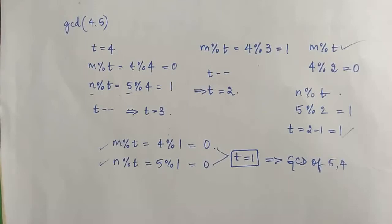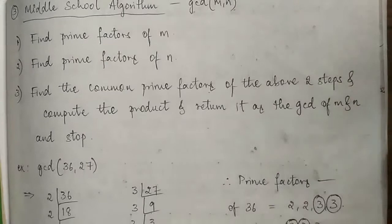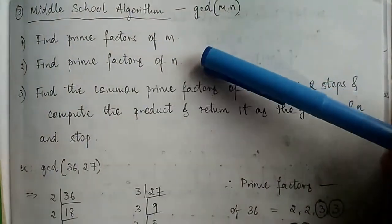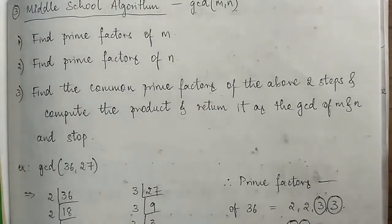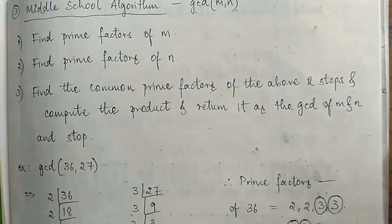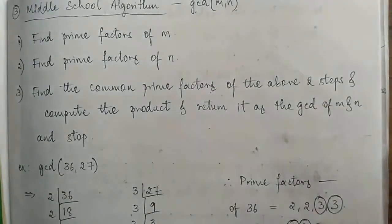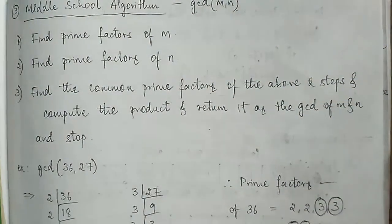There is a third method called the middle school method, which is also used to find the GCD of two given numbers. The first step is to find the prime factors of m, the second step is to find the prime factors of n, then we find the common prime factors of both m and n, and finally return their product as the GCD of m and n.